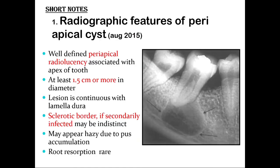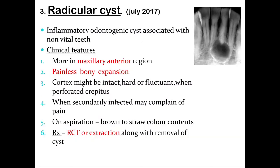The short notes that can be asked are the radiographic features of the periapical cyst, also known as the radicular cyst. In the radiographic features of the periapical cyst, there is a loss of lamina dura, along with a well-defined periapical radiolucency associated with the apex of the tooth, which can be more than 1.5 centimeters in diameter, enclosed with a sclerotic border. Sometimes, external root resorption can occur in the affected tooth.